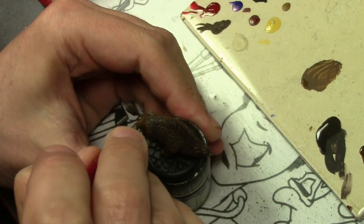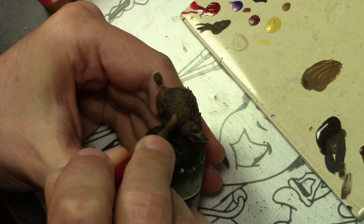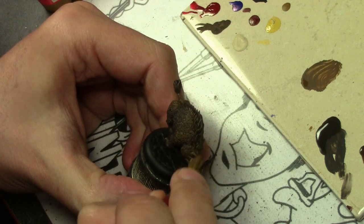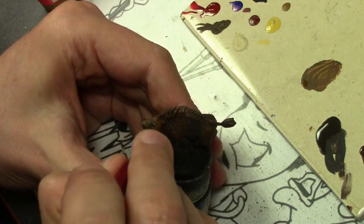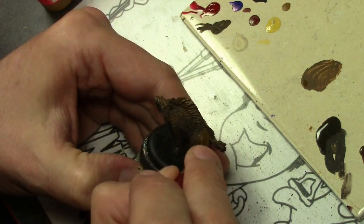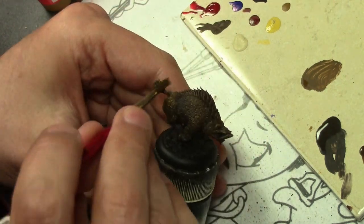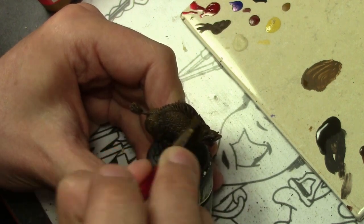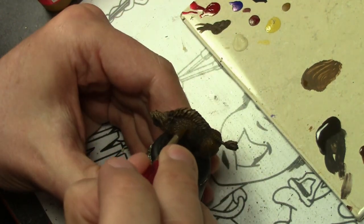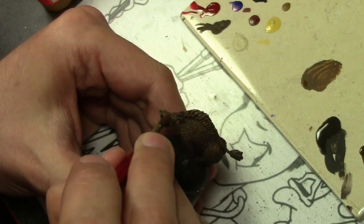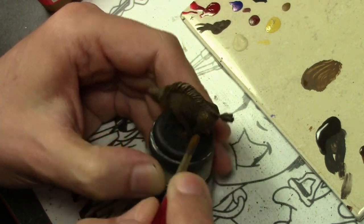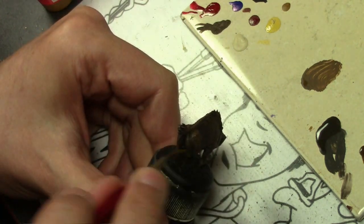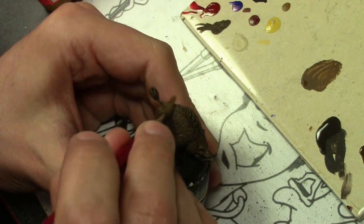Next is Vallejo Game Color Leather Brown. We're going softer with the brush on smaller areas. Generally when highlighting, each successive highlight goes on a smaller and smaller area. However, when painting fur, especially natural animal fur, there's a lot of color variation. So I'm actually drawing some of these later dry brushing highlights further into the darker areas just to get some variation of the color.